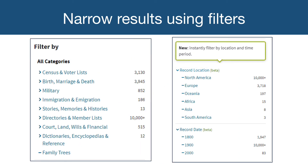Another way of narrowing your search results is to use the filters found on the left side of the screen. Click on a category, such as birth, marriage, and death, to narrow the results to only show records in that category. Or narrow the records by location or date. Using these filters with our original search, and narrowing the categories to records for marriage and divorce, in Canada, in the 1900s, the number of results went from the original 20,440 to 28.